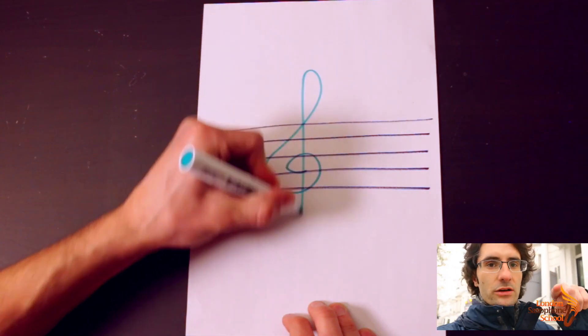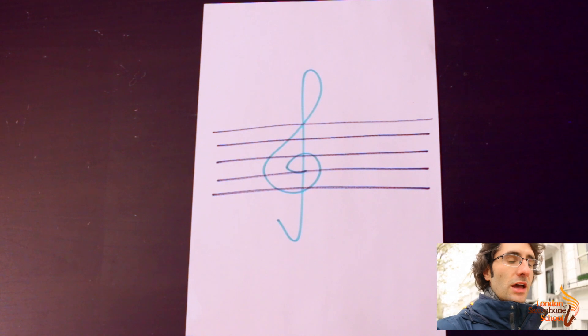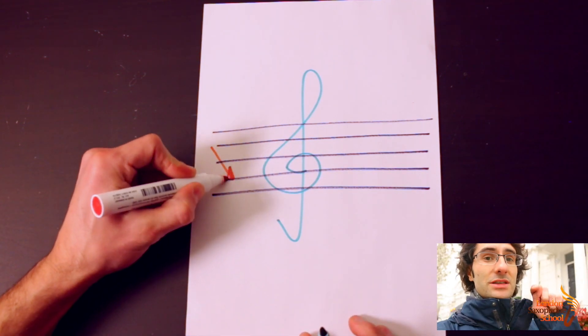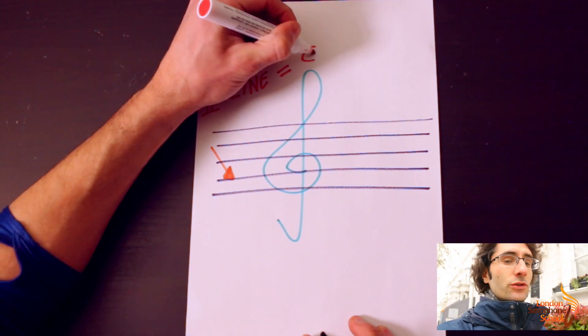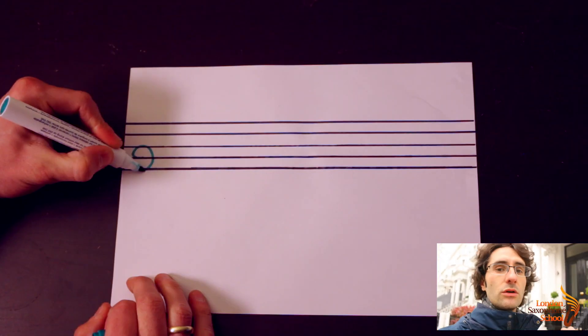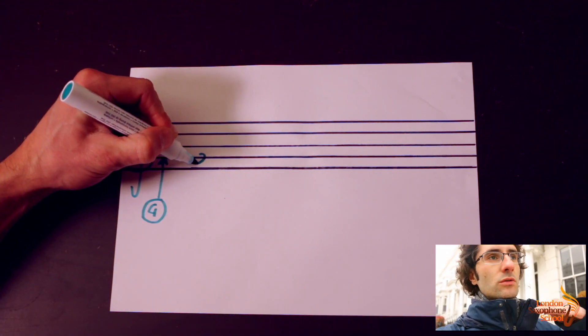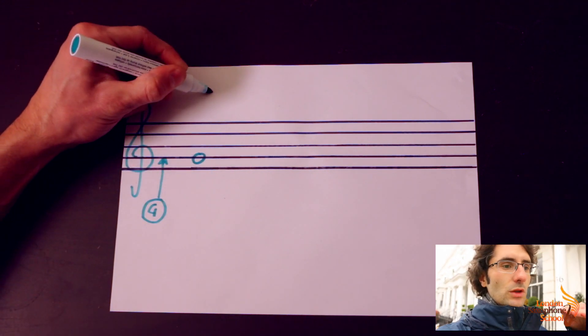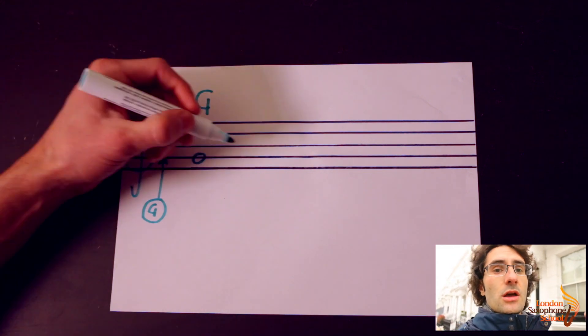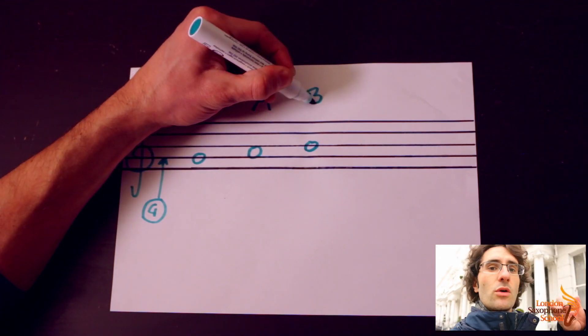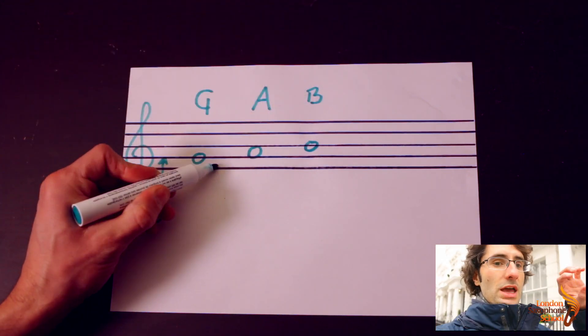The treble clef, also called the G clef — the fancy drawing of the treble clef actually starts on the second line, telling you that the second line is a G. What you need to do in order to learn how to read is count the other notes according to your G. You have a G, then you go to the next space which becomes an A, then the next line is a B. Notes go in spaces and in lines, whether they go up or they go down.